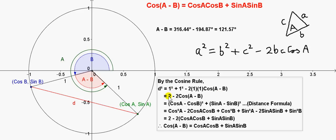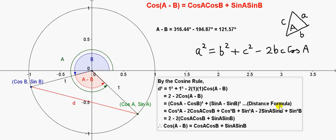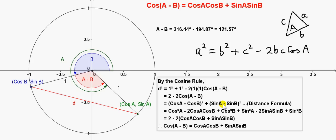Simplifying, 1 squared plus 1 squared is 2, and we have minus 2 here, giving D² = 2 − 2cos(A − B) from the cosine rule. Now we get the distance between the two points using the distance formula from coordinate geometry, which is essentially Pythagoras' theorem. We subtract the x-values squared and add the y-values squared, and since we're interested in the distance squared, we don't take the square root. The D² values must be the same whether we use the cosine rule or the distance formula.